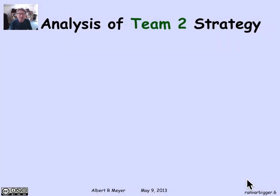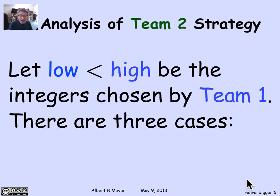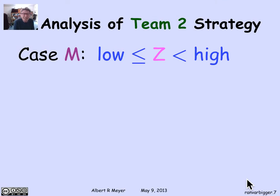Let's analyze team 2's probability of winning. Suppose team 1 picks two numbers — a low number and a high number — at least one apart, since they can't use the same number on both pieces of paper. We can consider three cases of what happens with your strategy. The most interesting is the middle case.